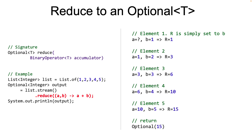Now here you might ask why the accumulator needs to be associative. This is important when dealing with parallel streams, because the JVM might divide the stream into subgroups, handle these groups separately, and then combine them. Having the accumulator as associative implies that the reduction will not depend on the order in which these subgroups are handled.